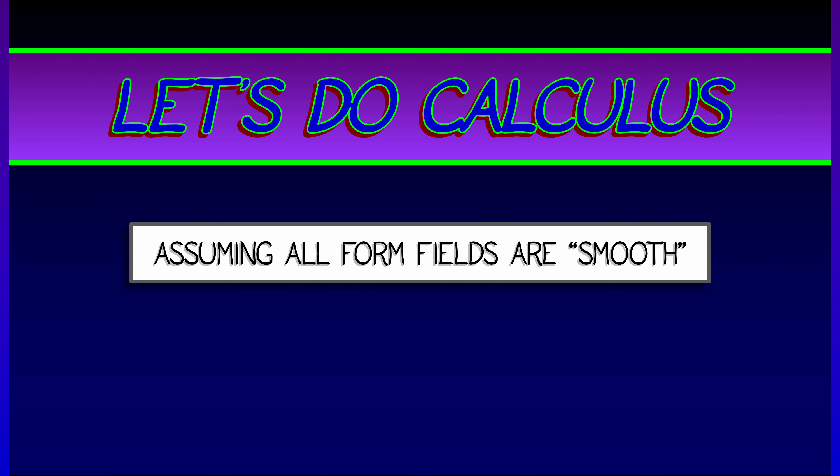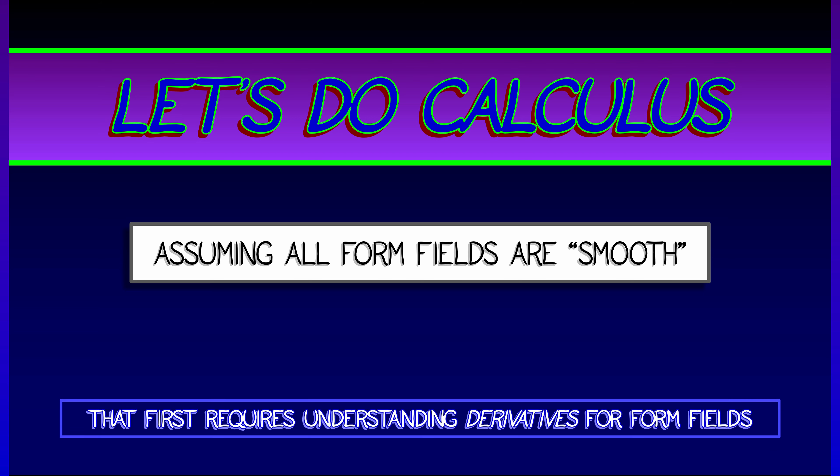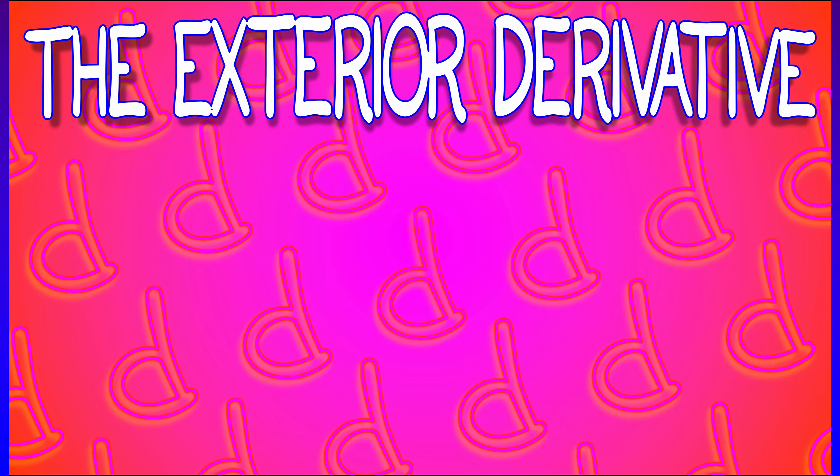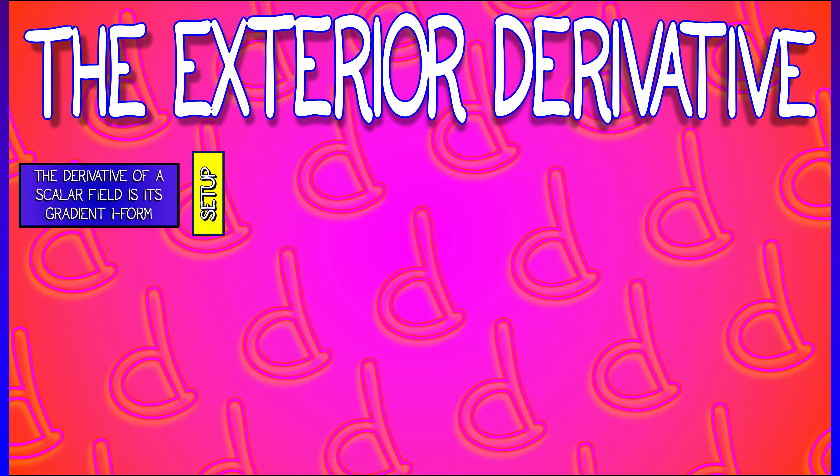Let's do some calculus. Let's do some calculus for form fields, assuming, of course, that all of these fields are smooth. Wait, what does that mean? Oh, that means it's differentiable. Wait, what does that mean? Aha, let's go back to the exterior derivative that we learned in 3D, and let's scale it up to arbitrary dimensions.